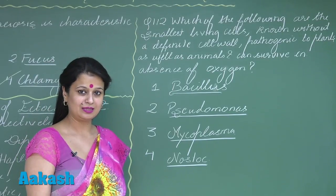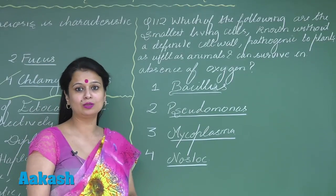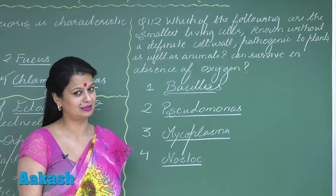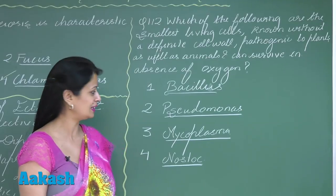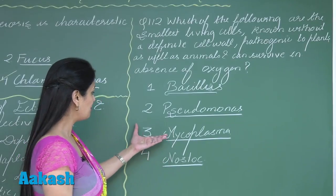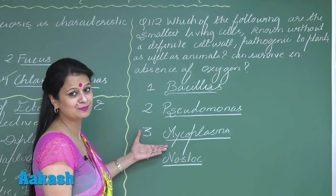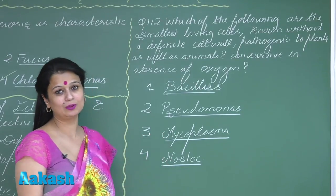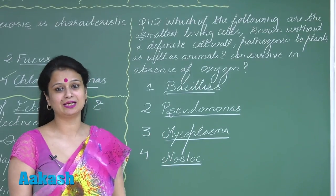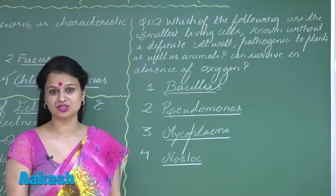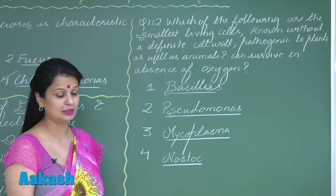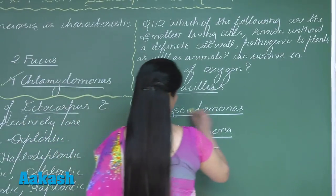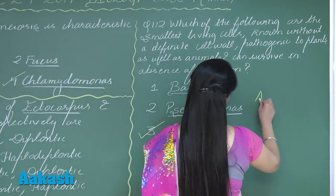In bacteria, the cell wall component present is peptidoglycan. Mycoplasma lacks a cell wall, which is why they can change their shape — they are pleomorphic. So the right option here is option number three.